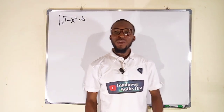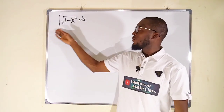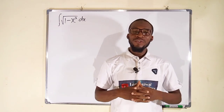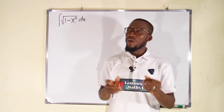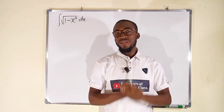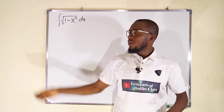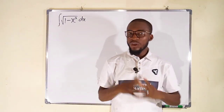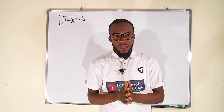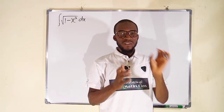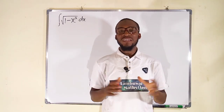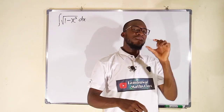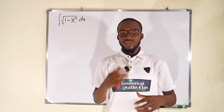Hello, good day viewers. In this tutorial we are going to find a solution to this integration. From the eyes it looks so simple, but honestly it requires so many substitutions that involve trigonometry. But this is a special case because you can see under the square root we have difference of two squares. One is a function and the other one is a constant, and hence we can replace x with a sine function. So let us start.